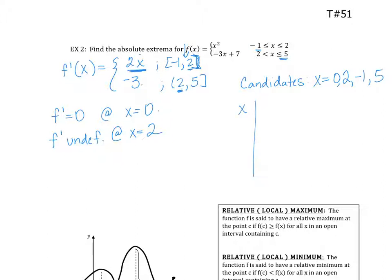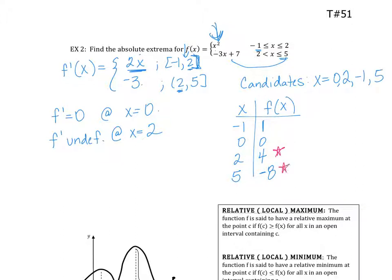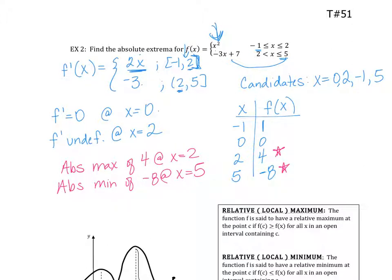Now let's make my chart with all those values. I make sure I plug into the right equation. For negative one, I plug into x², which gives 1. At zero I get 0. At two, I'm still plugging into x² and I get 4. At five, I plug into the second piece and I get negative 8. I can look for the highest Y value: absolute max of 4 at x = 2, and absolute min of negative 8 at x = 5.